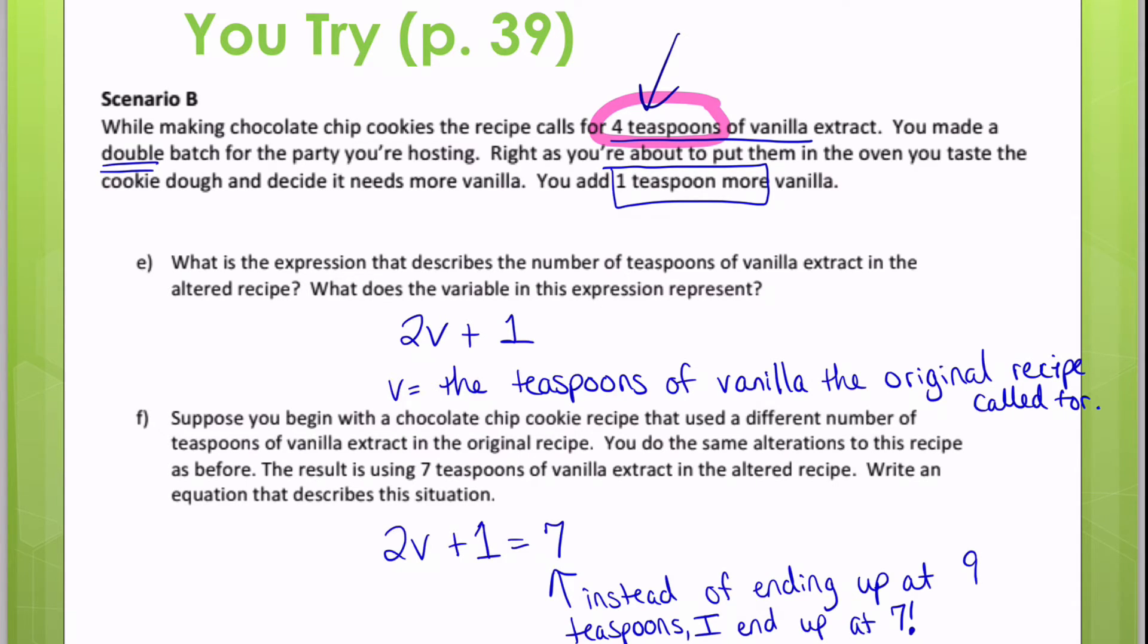Then you look at F, in this scenario changes. Now, instead of ending up at nine teaspoons, I'm going to end up at seven teaspoons. So this would be my equation that describes this situation. I hope you found this video helpful. And now you're all set to try those practice problems in your lesson videos.